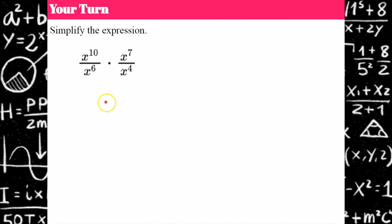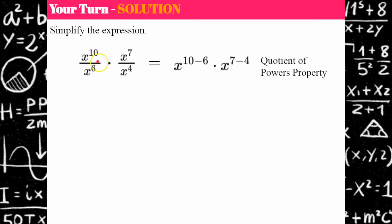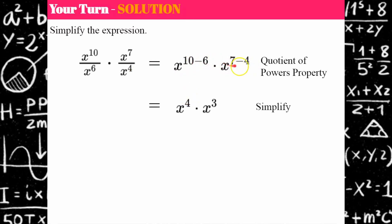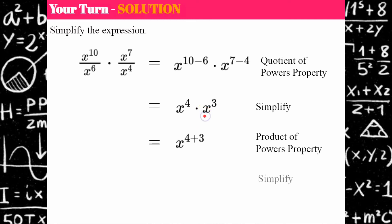Welcome back. There are multiple ways to approach this problem; I'll show you one today. First, I'm going to use the quotient property for both ratios. x to the tenth over x to the sixth — same base, so subtract the exponents. Second ratio, subtract the exponents as well. Ten minus six is four; seven minus four is three. Now I use my product of powers property and add the exponents, giving a final answer of x to the seventh.